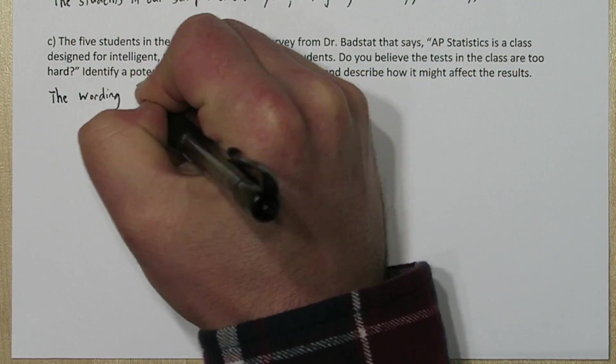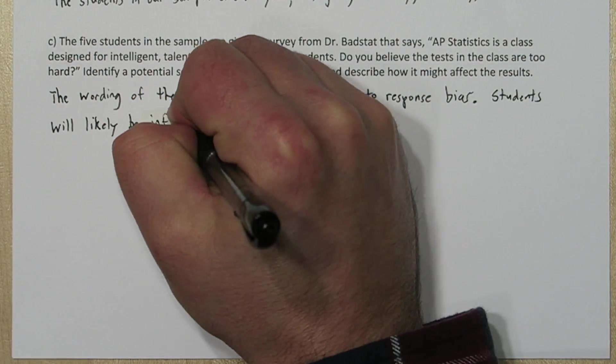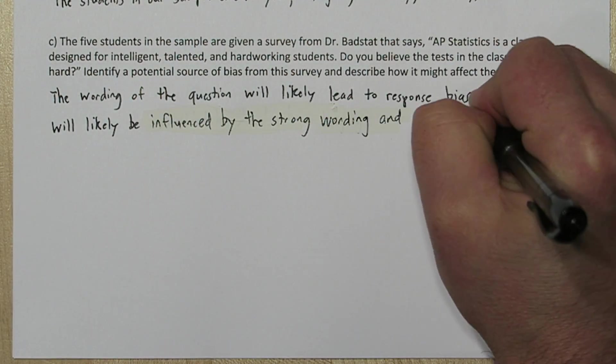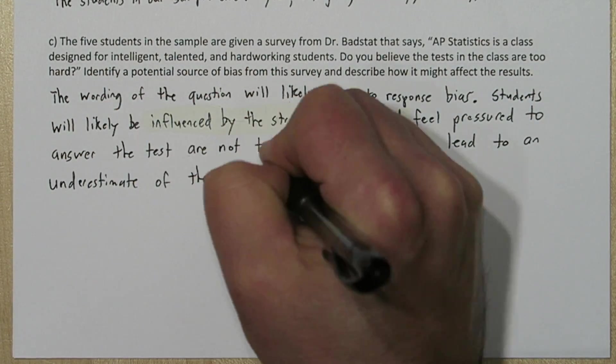The wording of this question will likely lead to response bias. Students will likely be influenced by the strong words like intelligent, talented, hardworking, and they're going to feel pressured to answer the test are not too hard.